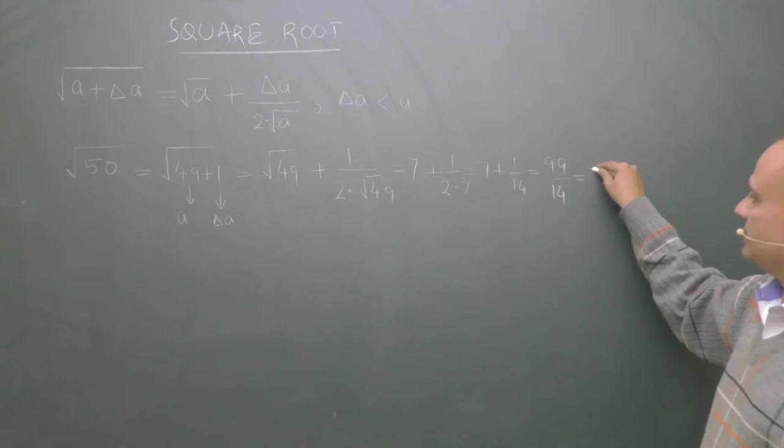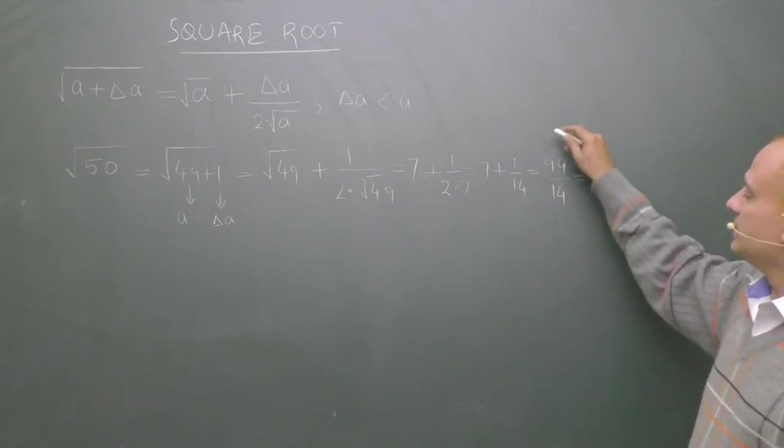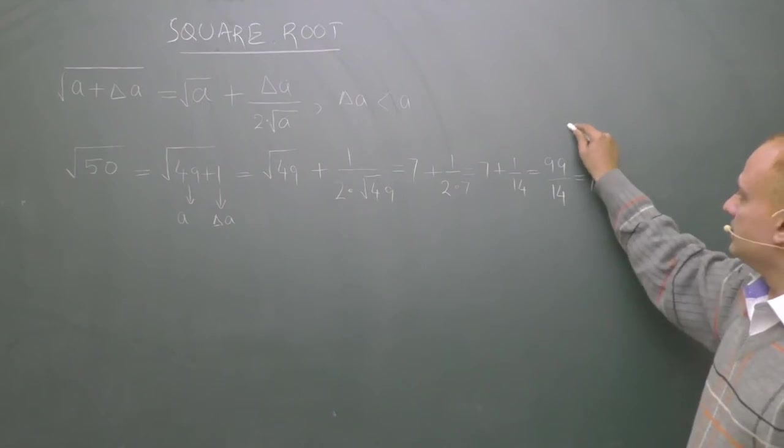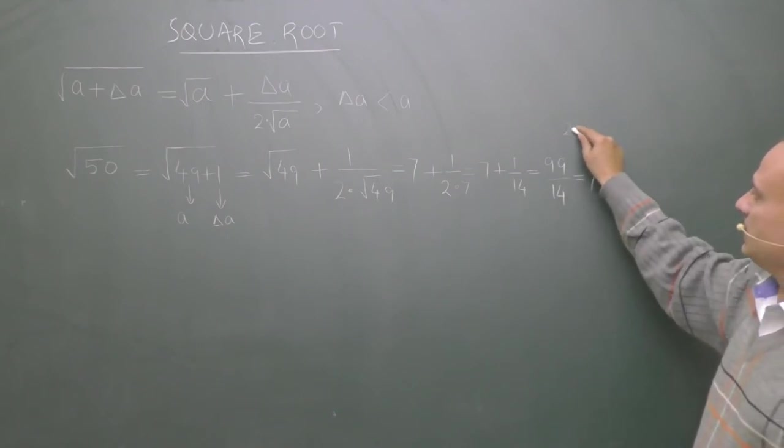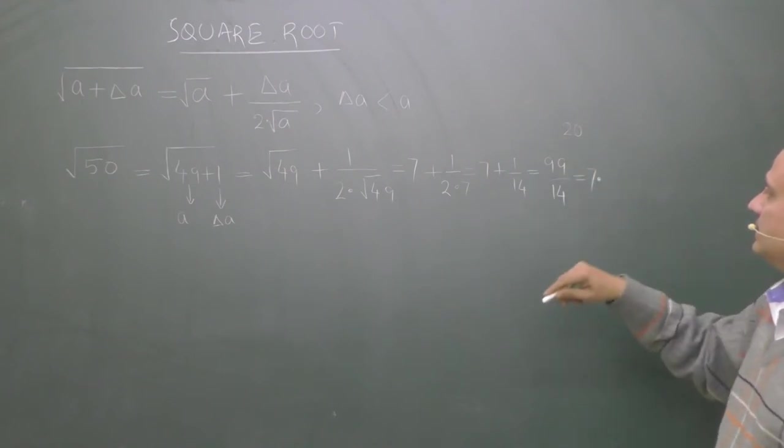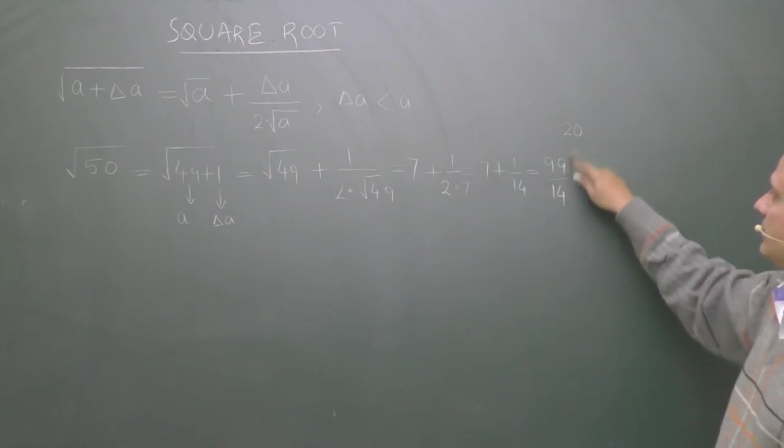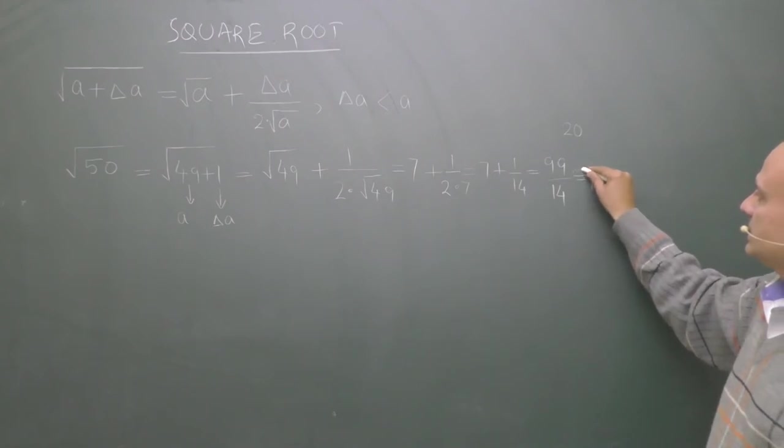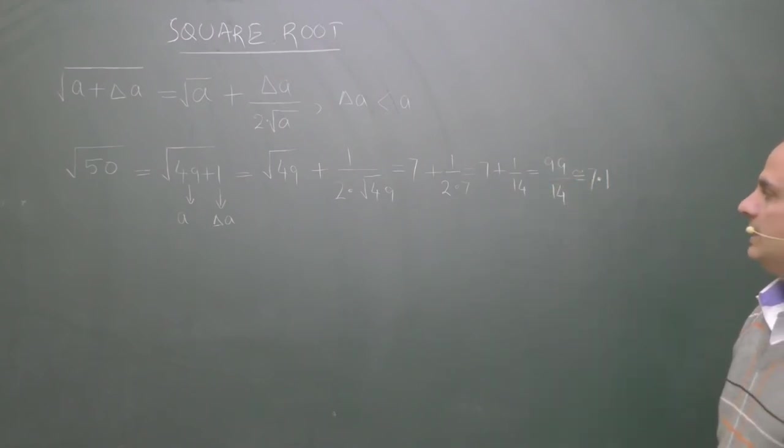14 into 7 plus 1 upon 14. 14 into 7 is 98. Remainder is 1. Then 14 into 7 plus 98, remainder is 2. 2 is not divisible by 14. Apply a 0 and put a decimal sign here. Now divide 20 by 14. You will find 14 into 1 is 14. Approximately 7.1. This result is an approximate result. It is not an exact result.